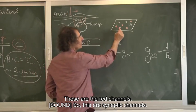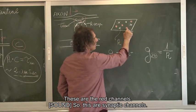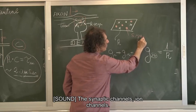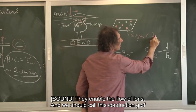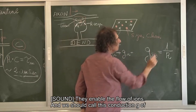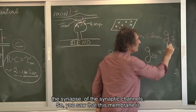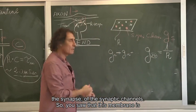These are the red channels. So these are the synaptic channels, the synaptic ion channels. They enable the flow of ions. And we shall call this conduction G of the synapse, of the synaptic channels.